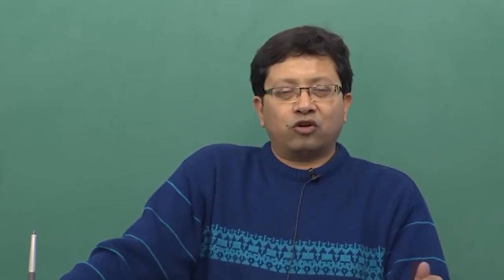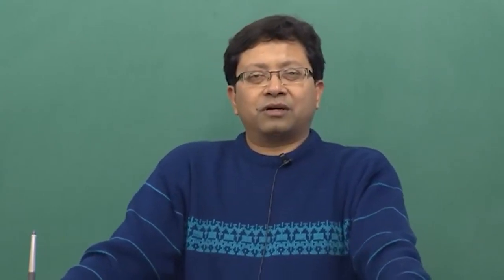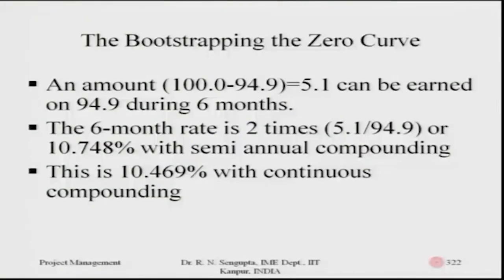We are discussing how to find out the interest rate given the zero rates and corresponding values. Referring to the twenty-sixth lecture, the interest rates for half a year (0.5), one year (1.0), one point five years, and two years were given, and based on that we are trying to calculate. It was also mentioned how payments are made — quarterly, semi-annual, or annual basis.